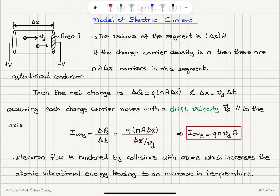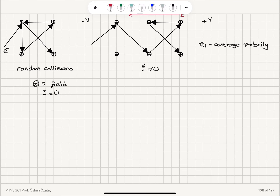So we talked about the model of electric current. When we consider a segment of a conductor with volume delta x times area A, if the charge carrier density is N, the number of carriers in this segment is N times volume A·delta x. The net charge that flows through it is the charge of each carrier multiplied by the number of charges N·A·delta x. The distance traveled is the average velocity Vdrift multiplied by delta t, and the average current is delta Q over delta t, which is Q·N·Vd·A. Electron flow is hindered by collisions with atoms, increasing atomic vibrational energy and causing heating of the conductor.